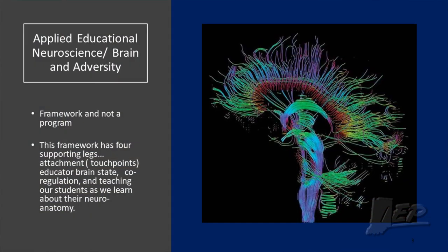This framework stands on four legs, just like a sturdy coffee table. Those four legs have an order of priority, and the very first leg is my brain state — I cannot emphasize this enough. Educator brain state is all about discipline: how we are coming into our classrooms, our moods, our feelings, the way that we are sensing the environment as we interface with children and adolescents.